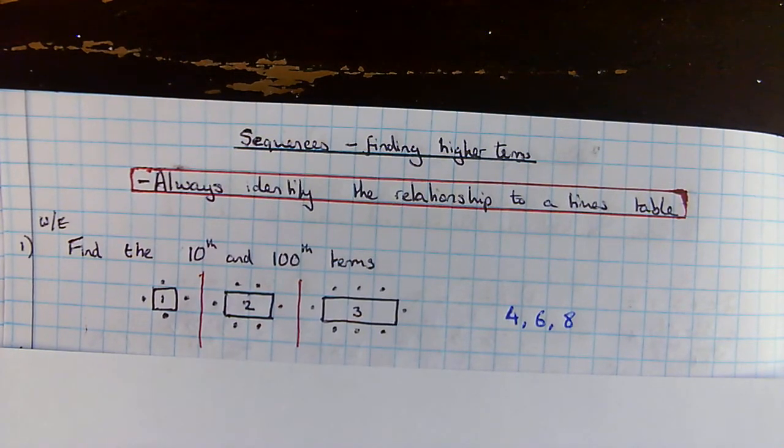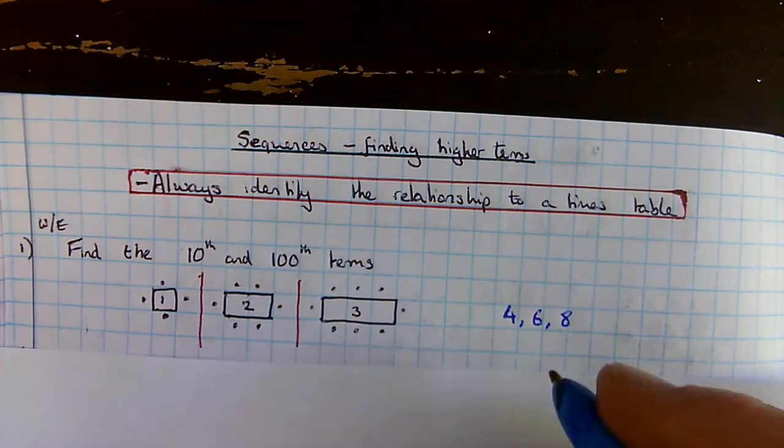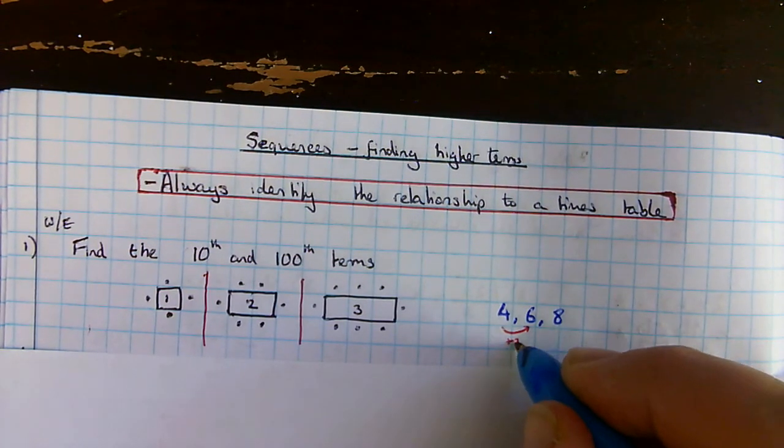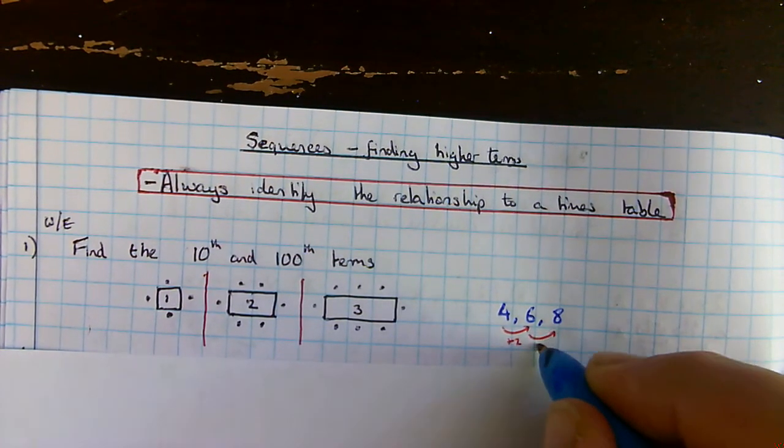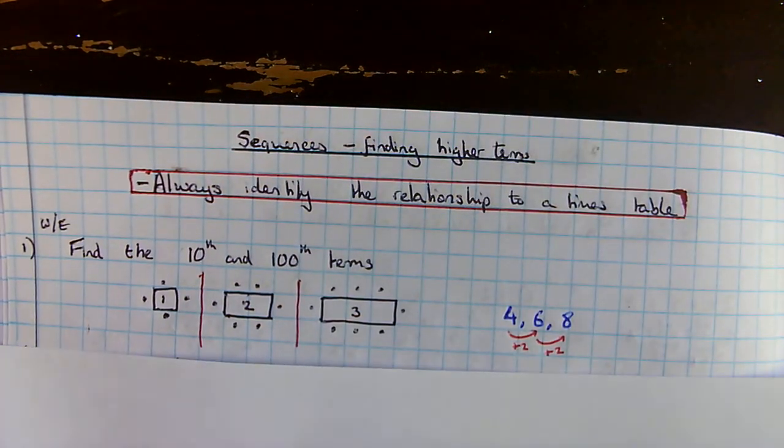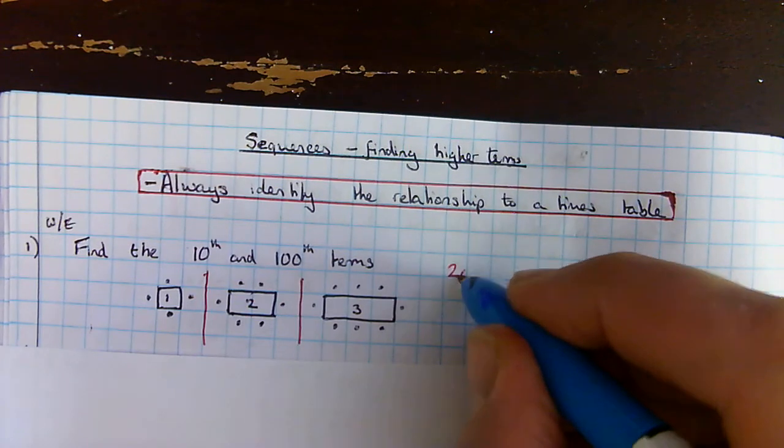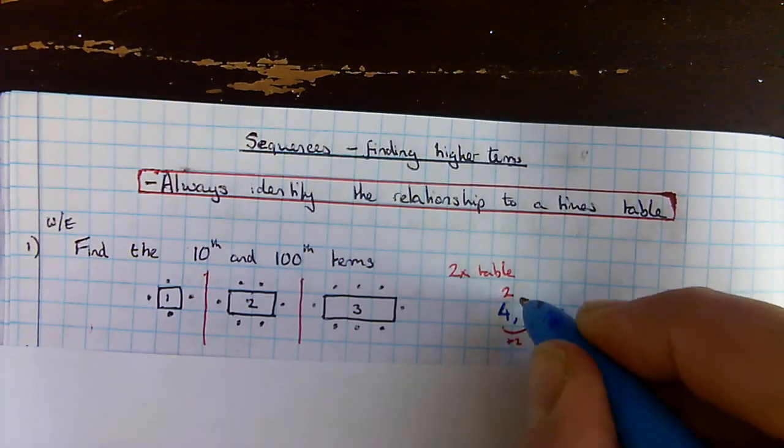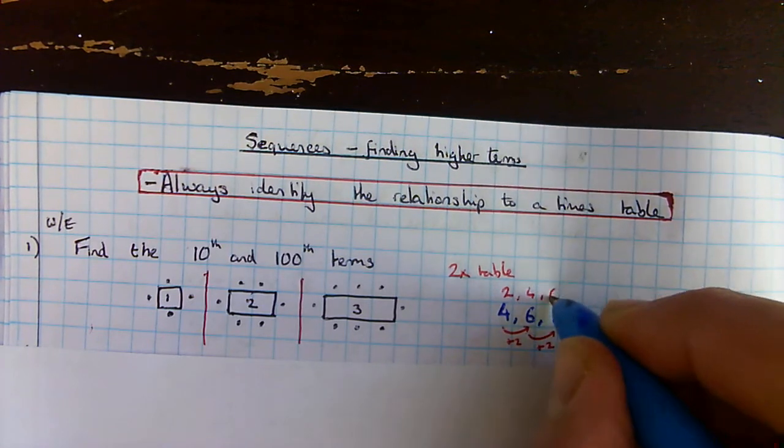What I should be able to see is that each additional table that I put in lets me go up by two. So it's related to the two times table. I can write two times table and there's my two times table: two, four, six.